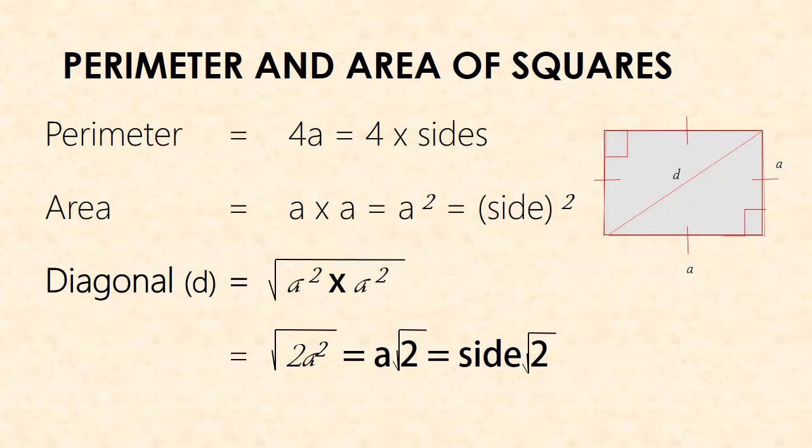Next, the formula for perimeter and area of the square. The perimeter equals 4 times A, where A is the side of the square — all sides are equal in the square. The area of the square equals A times A, that is A squared. We can calculate the diagonal by taking the square root of A squared plus A squared, which equals the square root of 2A squared, equal to A times the square root of 2.